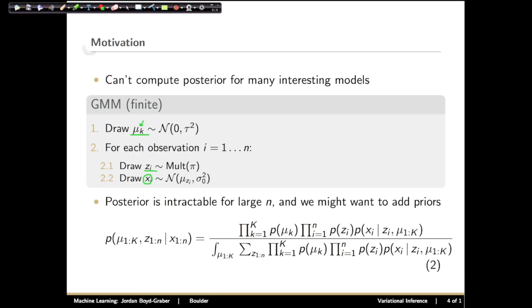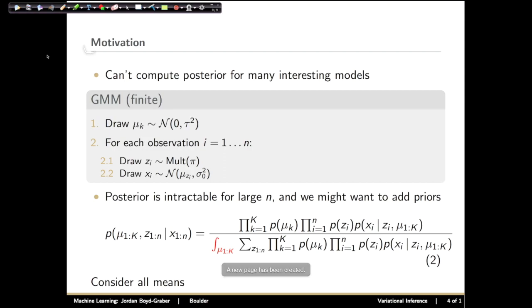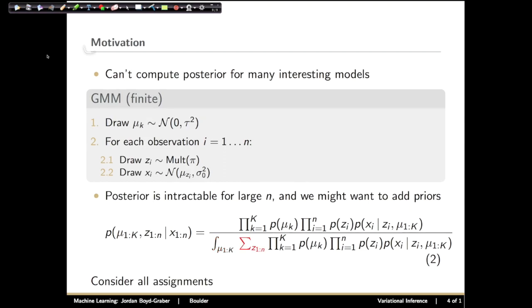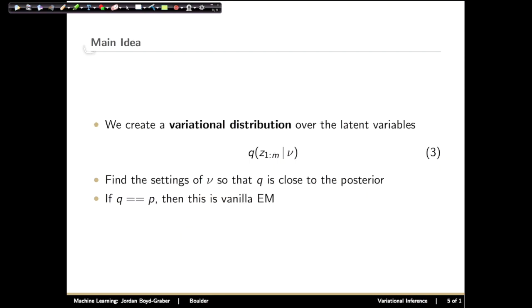But the posterior for Gaussian mixture models is intractable for large n. And if you want to add priors to the model, expectation maximization that we talked about before for Gaussian mixture models simply doesn't work. This is because you have to consider all of the means, all of the cluster assignments, and it becomes computationally intractable.